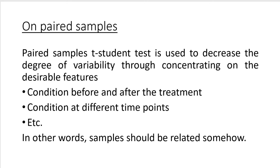In order to make any reasonable conclusions about the evidence against the null hypothesis. However, if you observe the same people before and after the treatment, you decrease the degree of variability significantly. Basically, you observe a person of the same gender, the same age, the same habits, and the same genetics — the only difference is observing this person before versus after the treatment.